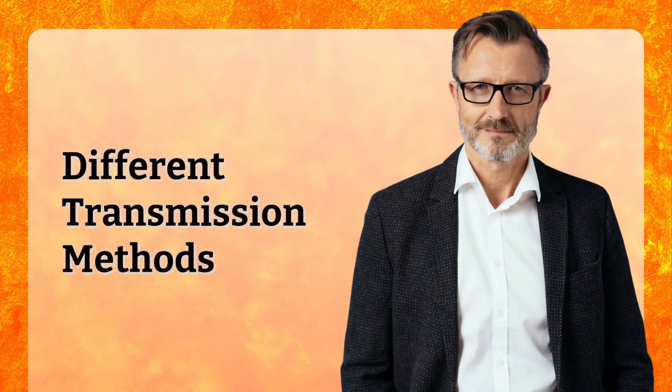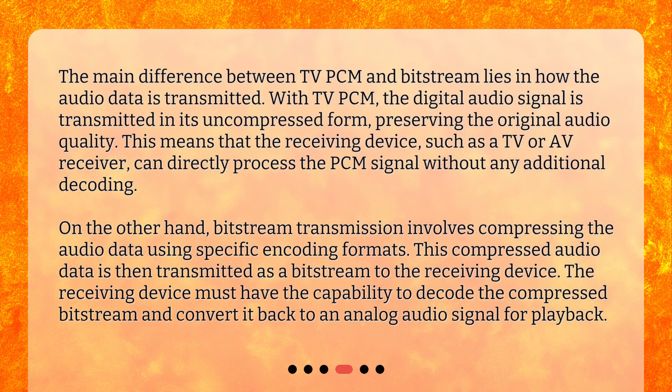Different Transmission Methods. The main difference between TVPCM and Bitstream lies in how the audio data is transmitted. With TVPCM, the digital audio signal is transmitted in its uncompressed form, preserving the original audio quality. This means that the receiving device, such as a TV or AV receiver, can directly process the PCM signal without any additional decoding. On the other hand, Bitstream transmission involves compressing the audio data using specific encoding formats. This compressed audio data is then transmitted as a bitstream to the receiving device. The receiving device must have the capability to decode the compressed bitstream and convert it back to an analog audio signal for playback.